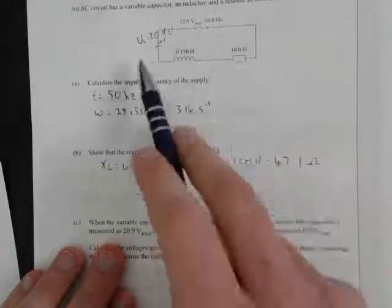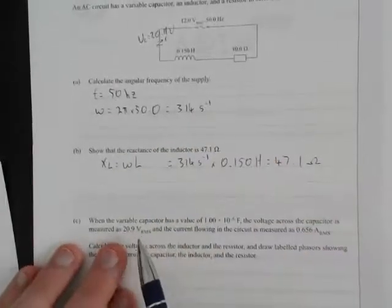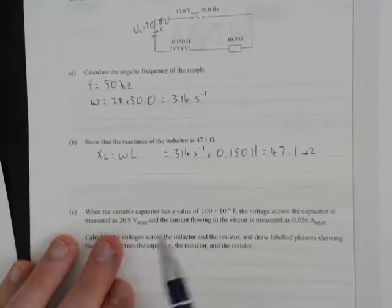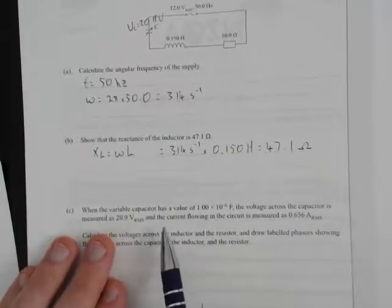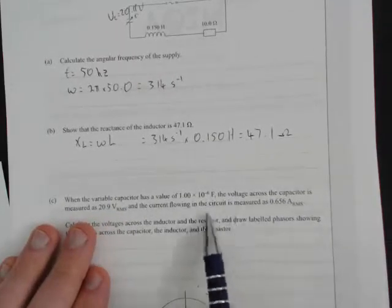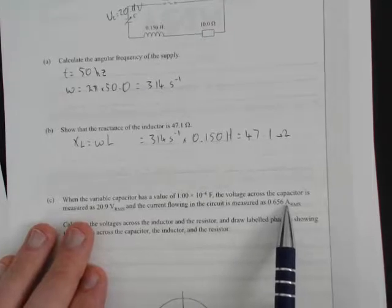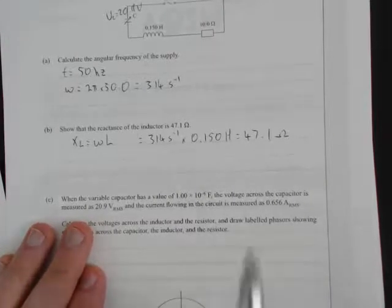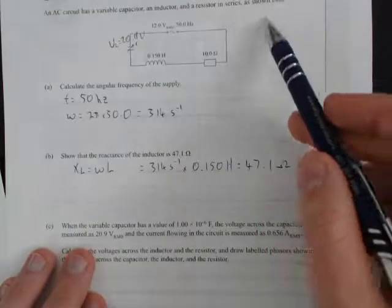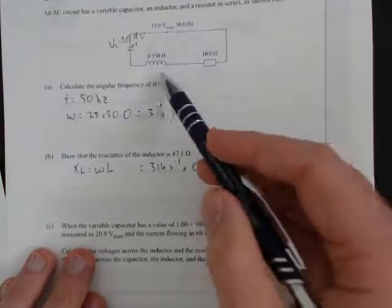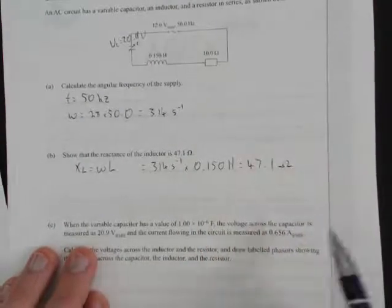Because we're going to work out voltages, we either stick with RMS or peak-to-peak—we can't interchange between the two. The current flowing through this circuit is 0.656 amps RMS. In a series circuit, current flows through all the elements, so it'll be 0.656 for all the elements.